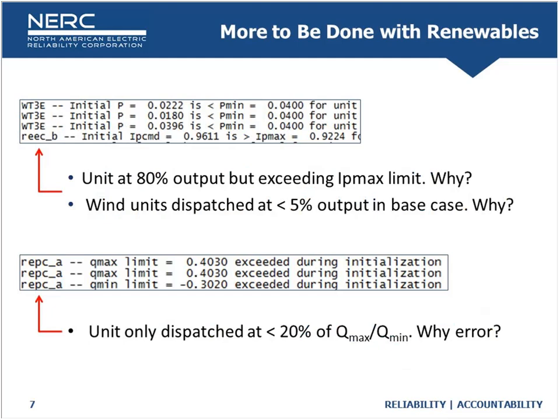Other examples include units dispatched within 20% of their Qmax or Qmin values yet throwing an error saying they're exceeding maximum reactive capability. There are issues associated with base values and maybe transitioning from the dynamics models into the power flow realm. There's more work to be done to ensure full alignment, making it as easy as possible for the generator owner as well as the planner who's actually running the studies.